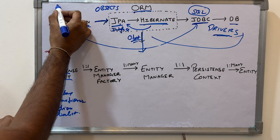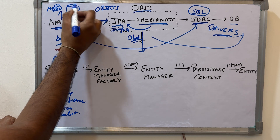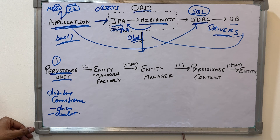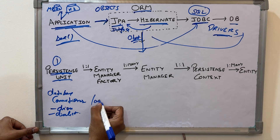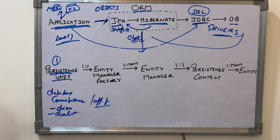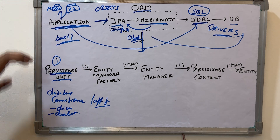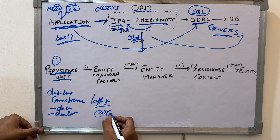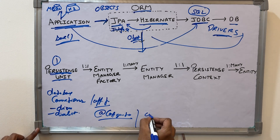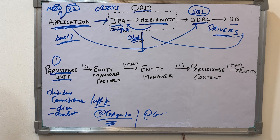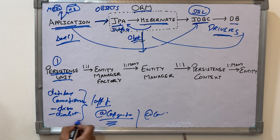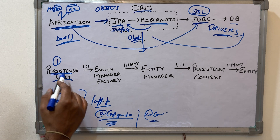There can be multiple Persistence Units — for example, if your application talks to MySQL and also H2 in-memory DB, you would have two Persistence Units. In Spring Boot, application.properties assumes only one Persistence Unit. If you have more than one DB, the suggestion is to use @Configuration classes, defining each database's configuration in a separate @Configuration class.